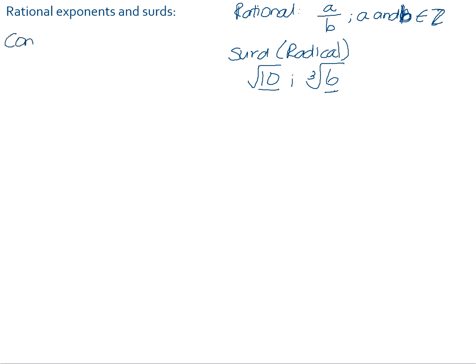So if we just consider something like the square root of x to the power of 6. When we're finding a square root, we want to find the number that we've multiplied by itself to give us the value under the surd sign. So if you are multiplying x to the power of something, multiplied by another x — it's exactly the same — and you're getting an answer of x to the power of 6. Remember that when you multiply powers with the same base, you add the exponents together. So if you want to find what two numbers you added together to give you 6, you need to divide 6 by 2.